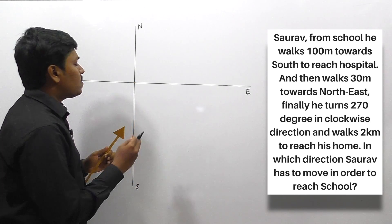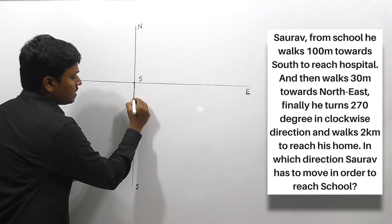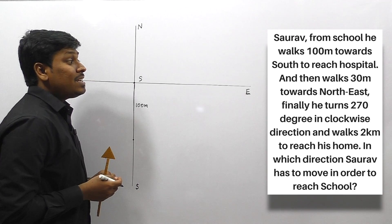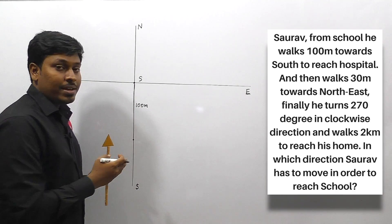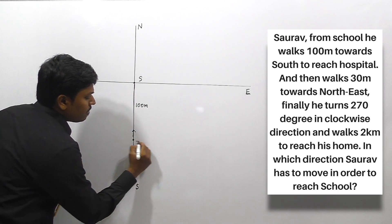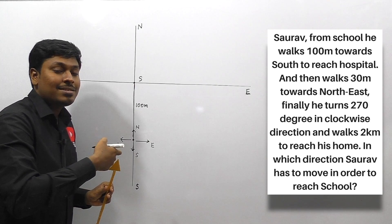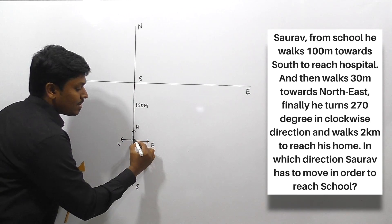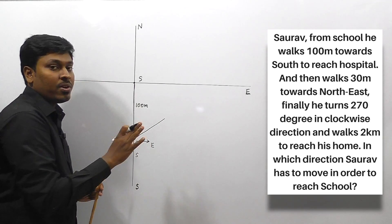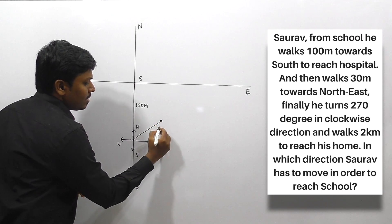From school, Sorrow initially walks 100 meters towards south — assume this is Sorrow's school, he is walking 100 meters towards the southern side. Then he walks 30 meters towards northeast direction. If you are brilliant you can directly draw the diagram, or if you are a beginner just draw a small direction — north, south, west, and east. From this point he is turning northeast direction and walks 30 meters — northeast is this side, draw exactly at an angle of 45 degrees. So from this point, turning northeast and walking 30 meters.